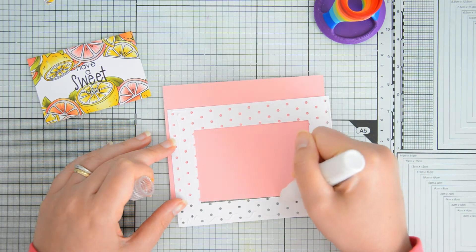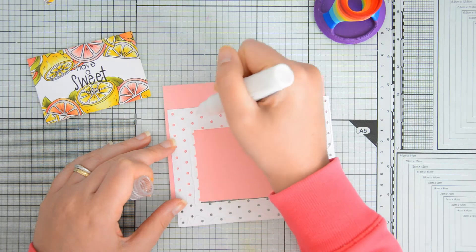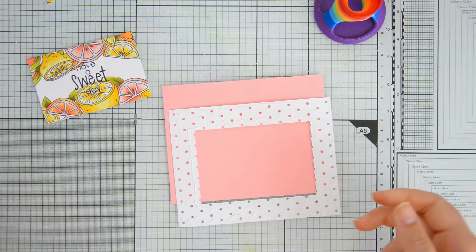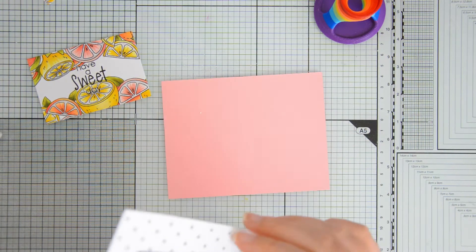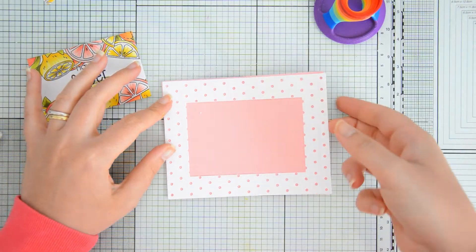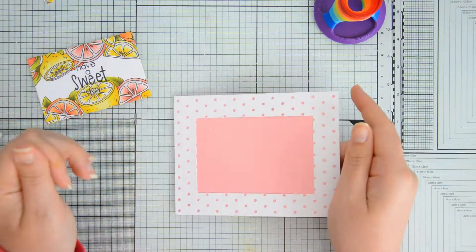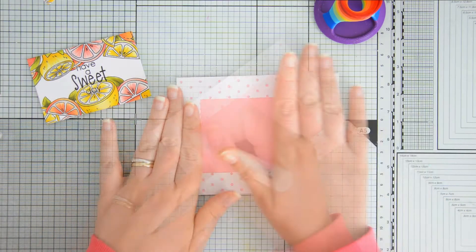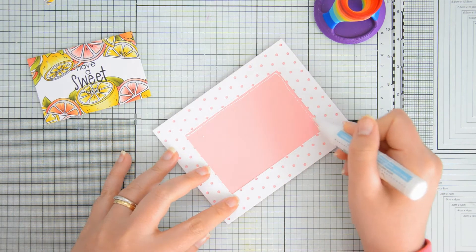I'm using my Studio Katia liquid glue to coat the back of this polka dot panel and then I can go ahead and glue it to the pink cardstock, making sure that it lines up nicely.